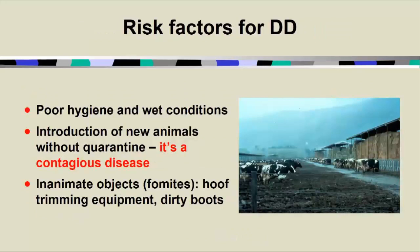As with foot rot, poor hygiene in wet conditions is conducive to digital dermatitis. You can certainly introduce it into a dairy by not quarantining new animals — so if you don't have digital dermatitis, congratulations. Quarantine animals and treat their feet appropriately to keep it off your farm. Once on a farm, it is very, very difficult to completely eradicate. We also know that inanimate objects — fomites — like hoof trimming equipment or dirty boots from a veterinarian who doesn't clean his or her boots going from one place to another, are entirely plausible routes of introduction. Good, solid biosecurity is a very important part of excluding digital dermatitis.